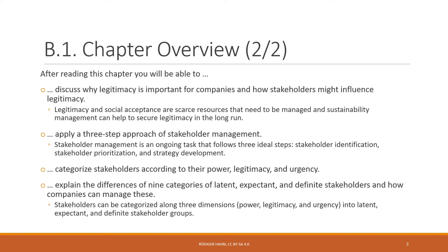You will then be able to categorize stakeholders according to their power, legitimacy, and urgency, and explain the differences across nine categories of stakeholders: latent, expectant, and definite stakeholders — and how companies can manage these different types. These three dimensions are used to categorize stakeholders into these three groups, helping companies to better approach and prioritize stakeholders.